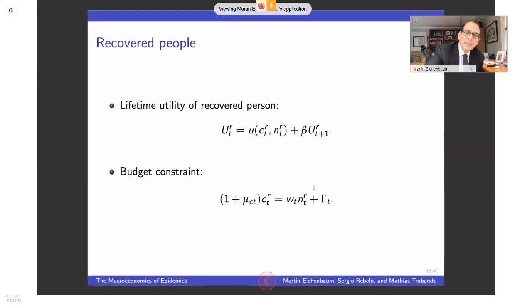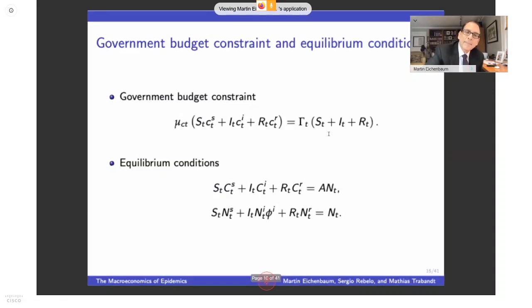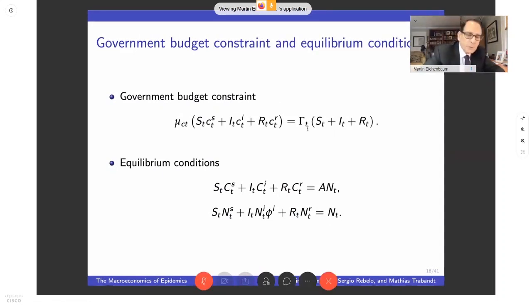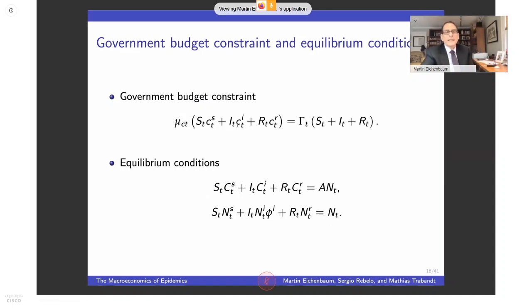Recovered people are permanently recovered — their recursion simply remains in the recovered state. The government in the simplest containment form hands out lump sum payments to all types of people in society and collects the containment tax. I stress I don't want to take this literally, and I'm very happy that the alternative modeling approach — where the government directly mandates behavior — gives virtually similar results.